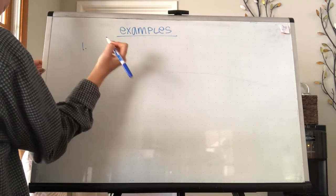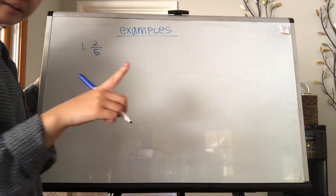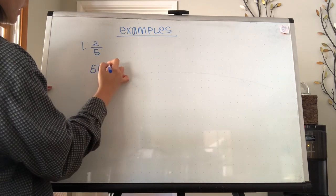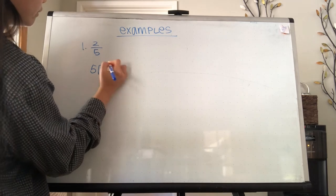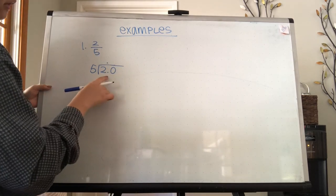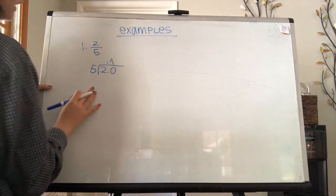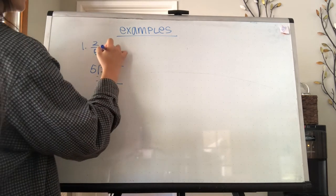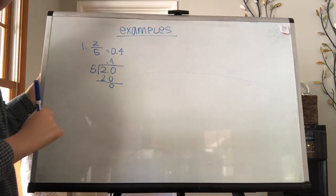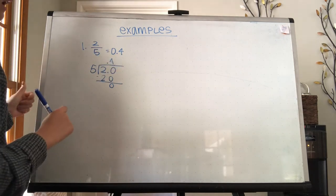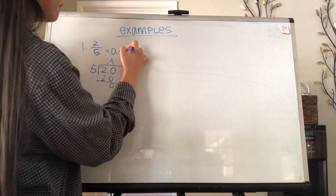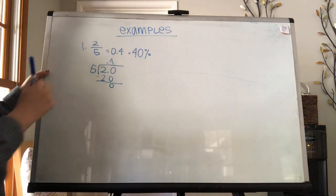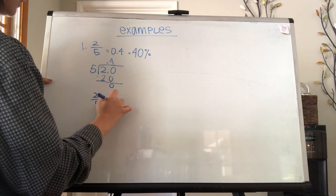Let's do a few examples to solidify what we learned. Number 1, we are given 2 over 5. The first step is to convert the fraction into a decimal using long division. 5 can't go into 2, so you add the decimal, bring it up, and add a 0. 5 goes into 20 four times; 5 times 4 is 20, with 0 remaining, so it's 0.4. Now the second step: move the decimal two spaces to the right and add a percent sign — you end up with 40%. So 2 over 5 equals 40%.